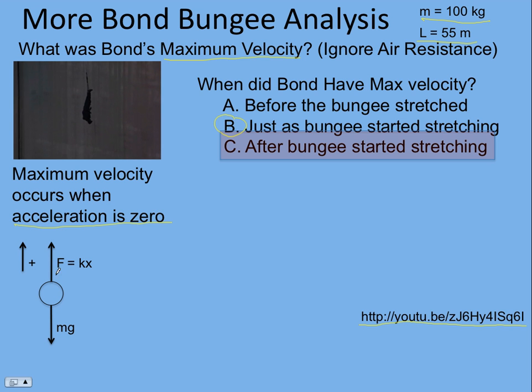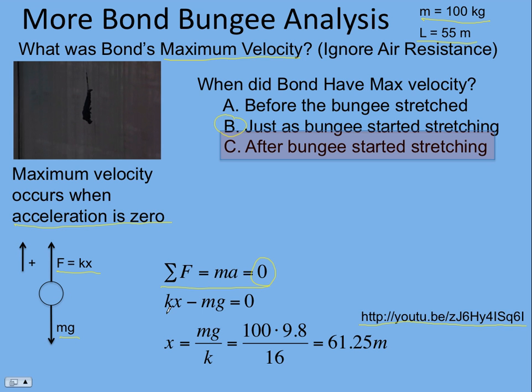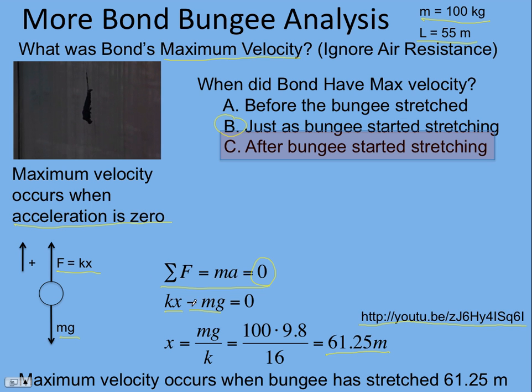Free body diagram of Bond: here's the bungee pulling up, and we're assuming a Hooke's law sort of bungee, a linear bungee, and then weight. We make up positive, but it doesn't really matter because the acceleration is zero. The sum of the forces has to add up to zero: positive kx minus weight. Solving for x, I found that the bungee has stretched 61.25 meters. Maximum velocity occurs when the bungee is stretched quite a bit, almost halfway. If you thought it was B, notice how far off you are. Think seriously about what we're doing here and why this is so.